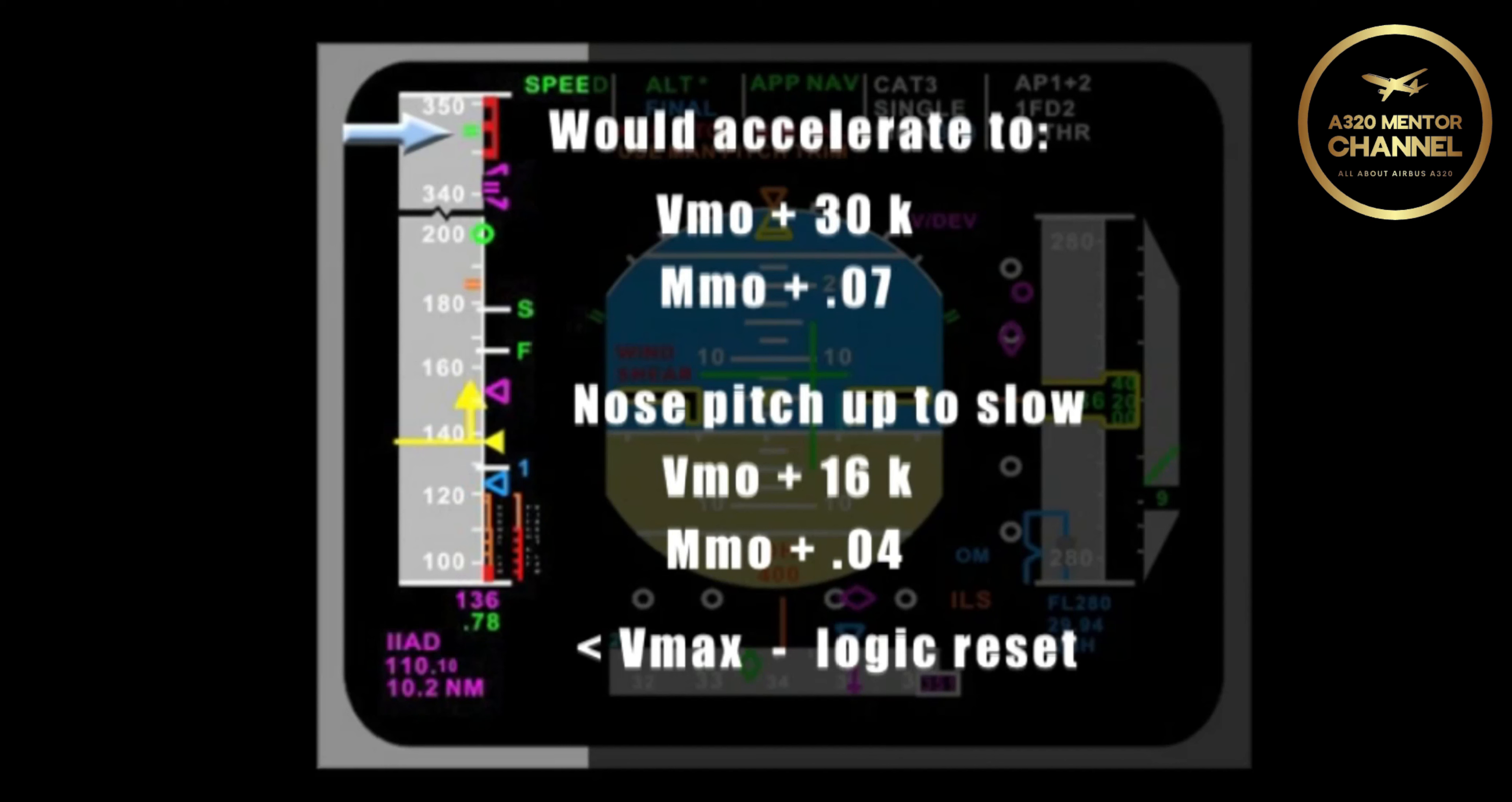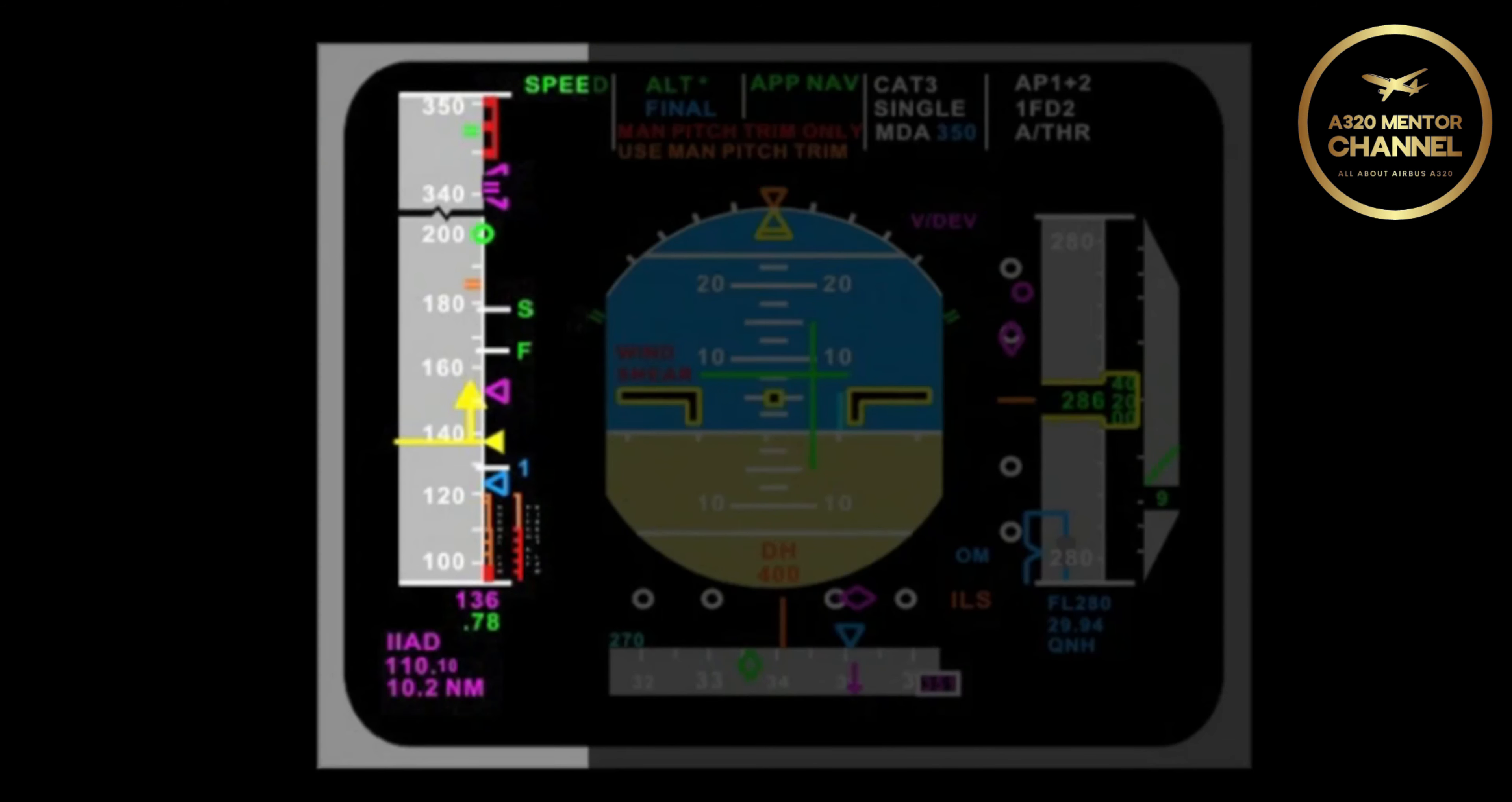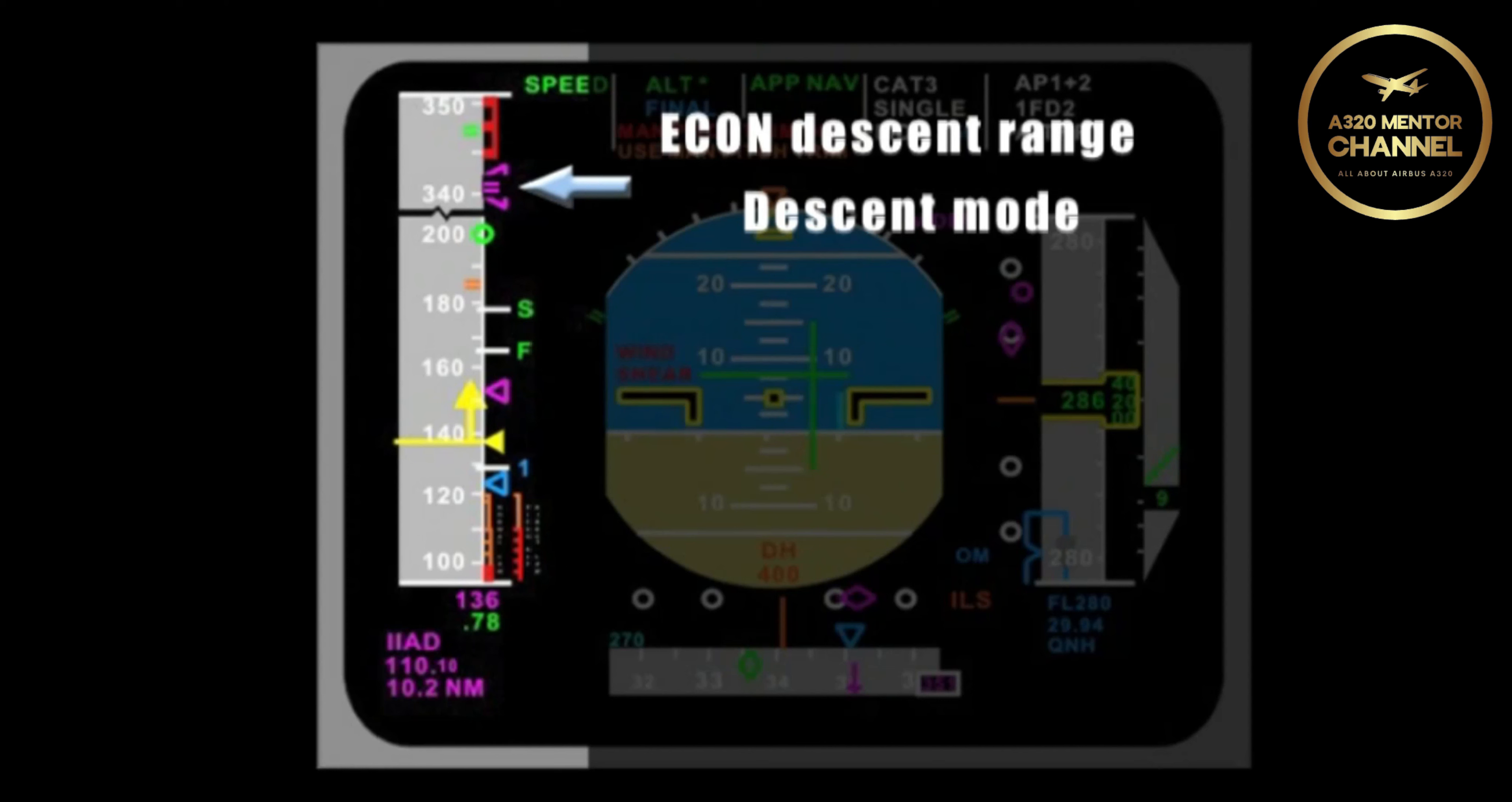Just below VMAX are a set of magenta brackets. What are those called? That is Econ descent range. When will these Econ descent brackets appear? Several conditions must be met. First, you must be in the descent mode.